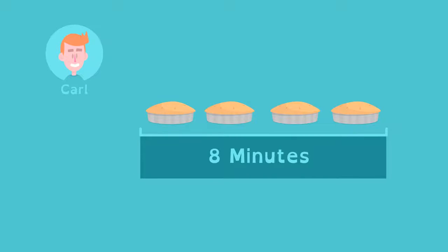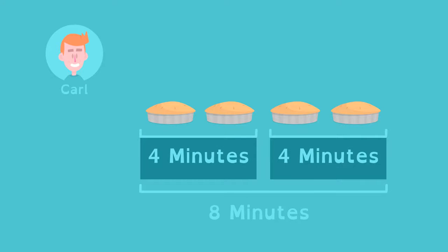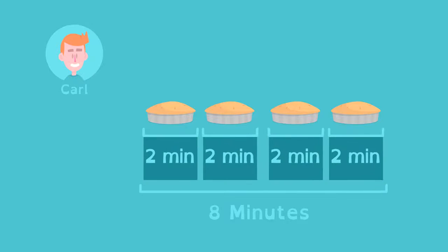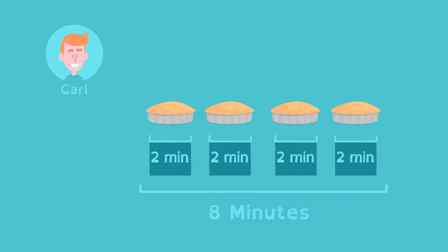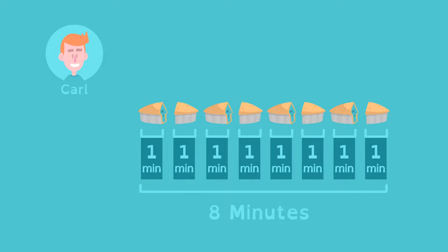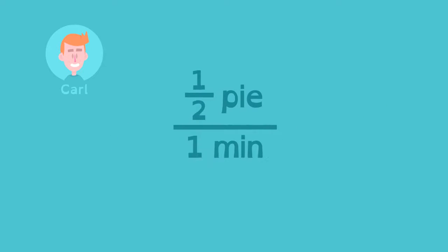Unit rate can help us figure this out. If Carl eats four pies in eight minutes, then he can eat two pies in four minutes, one pie in two minutes, or half a pie in one minute. This is Carl's unit rate, the ratio of the number of pies and time in minutes.